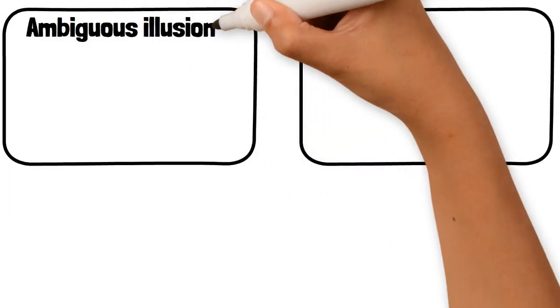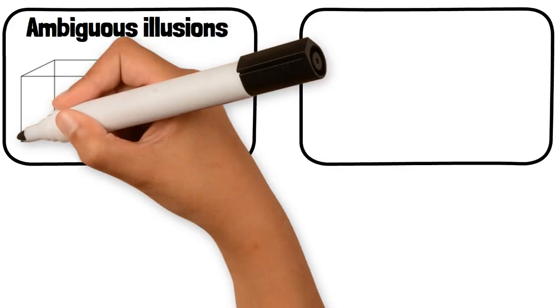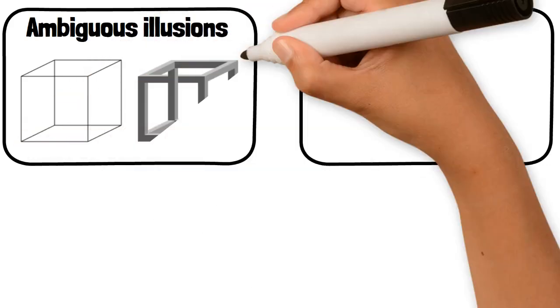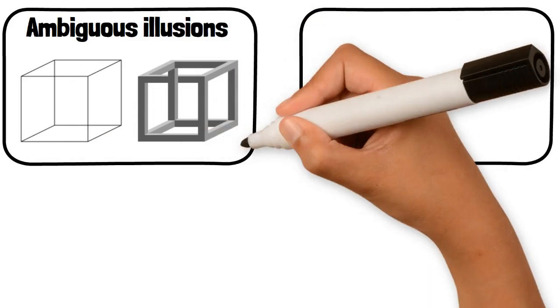Ambiguous illusions: These are images that can be interpreted in more than one way, such as the famous Necker cube, which can be seen as oriented in two different directions.